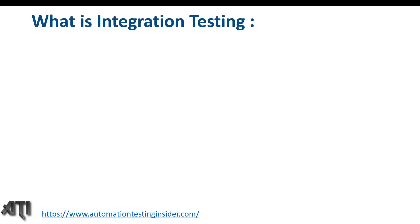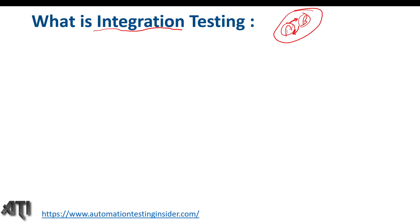So what do we mean by integration testing? Integration is nothing but combination. When we test two or more modules together, that is called integration testing. So if we have Module A and Module B, when we test these two modules together, that is integration testing — and we look at the interfaces, the connection between the two modules, like how data flows from Module A to B and from Module B to A.